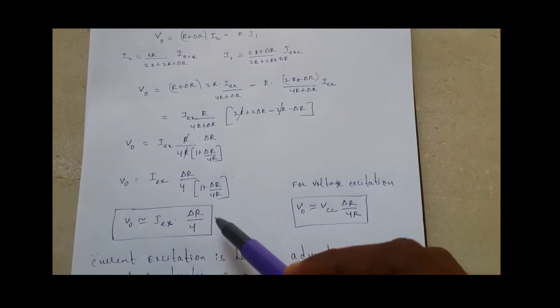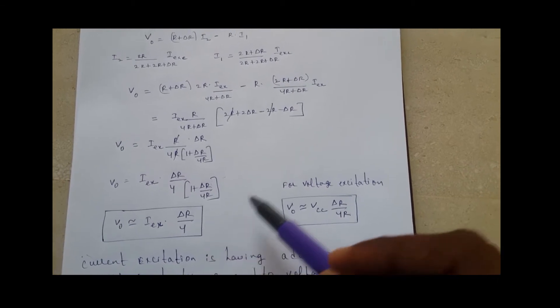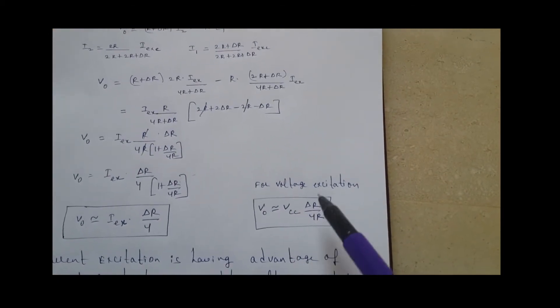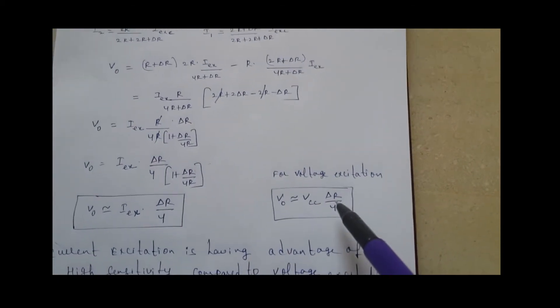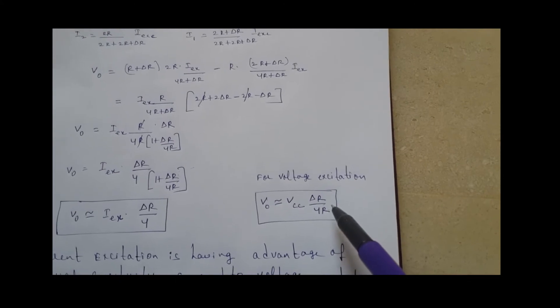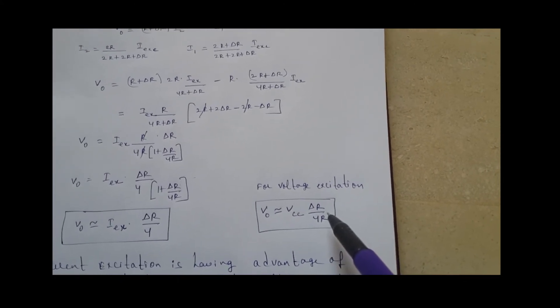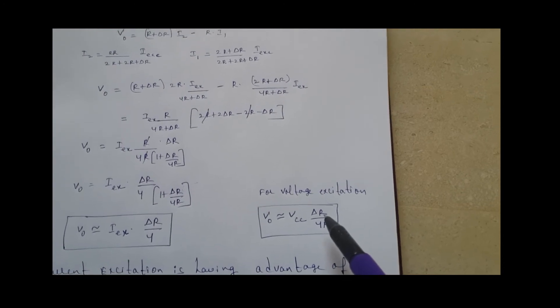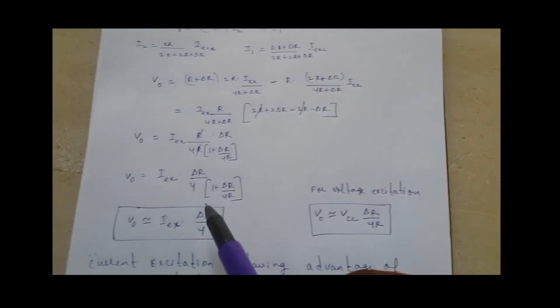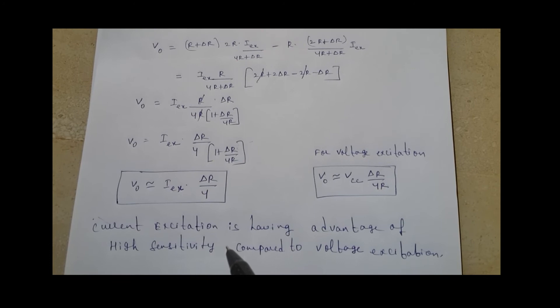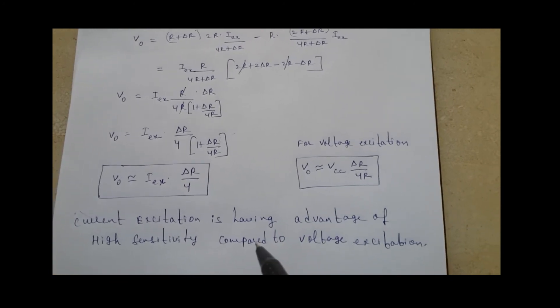So for voltage excitation with the quarter bridge, we are getting V_output equal to V_CC times delta R by 4R. So here in the denominator with voltage excitation we are getting, in addition to 4, we are getting 4R. So compared to this, the current excitation output is very high. This advantage of current excitation is it producing high sensitivity compared to voltage excitation.